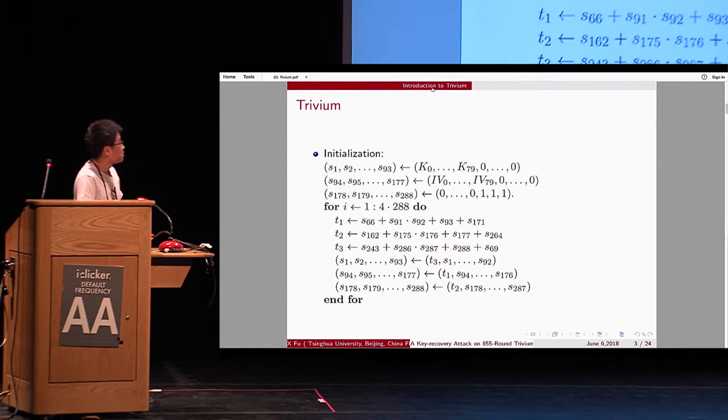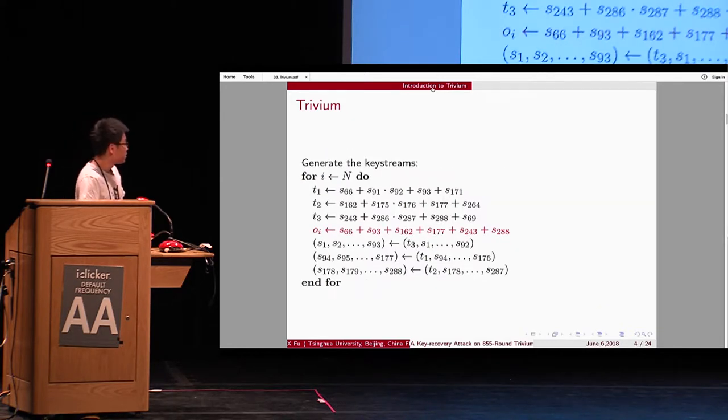Trivium is a stream cipher. It has 288-bit initialization state, and there are 1,152 rounds during the initialization phase. And then, output to the key stream, like this.